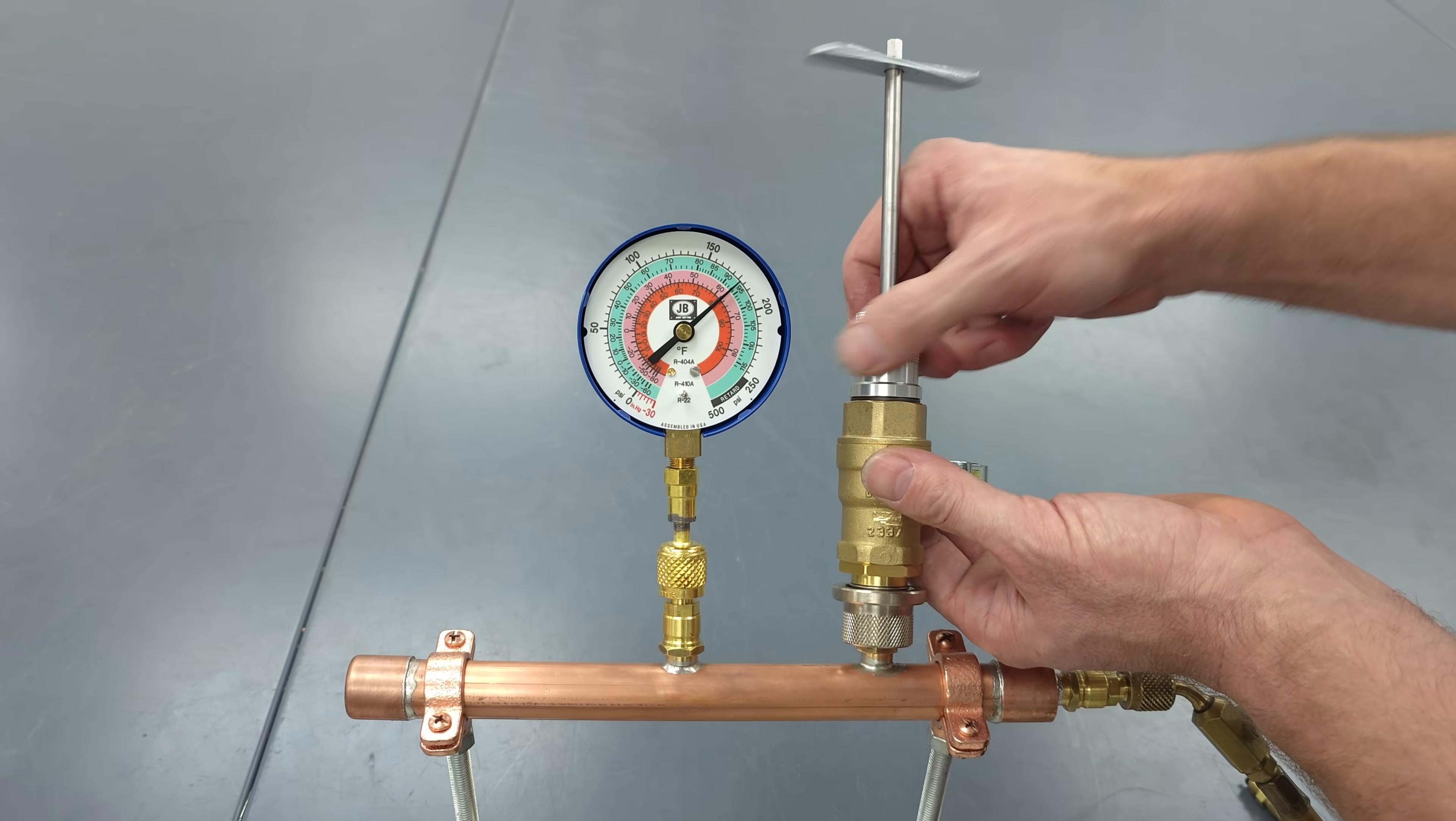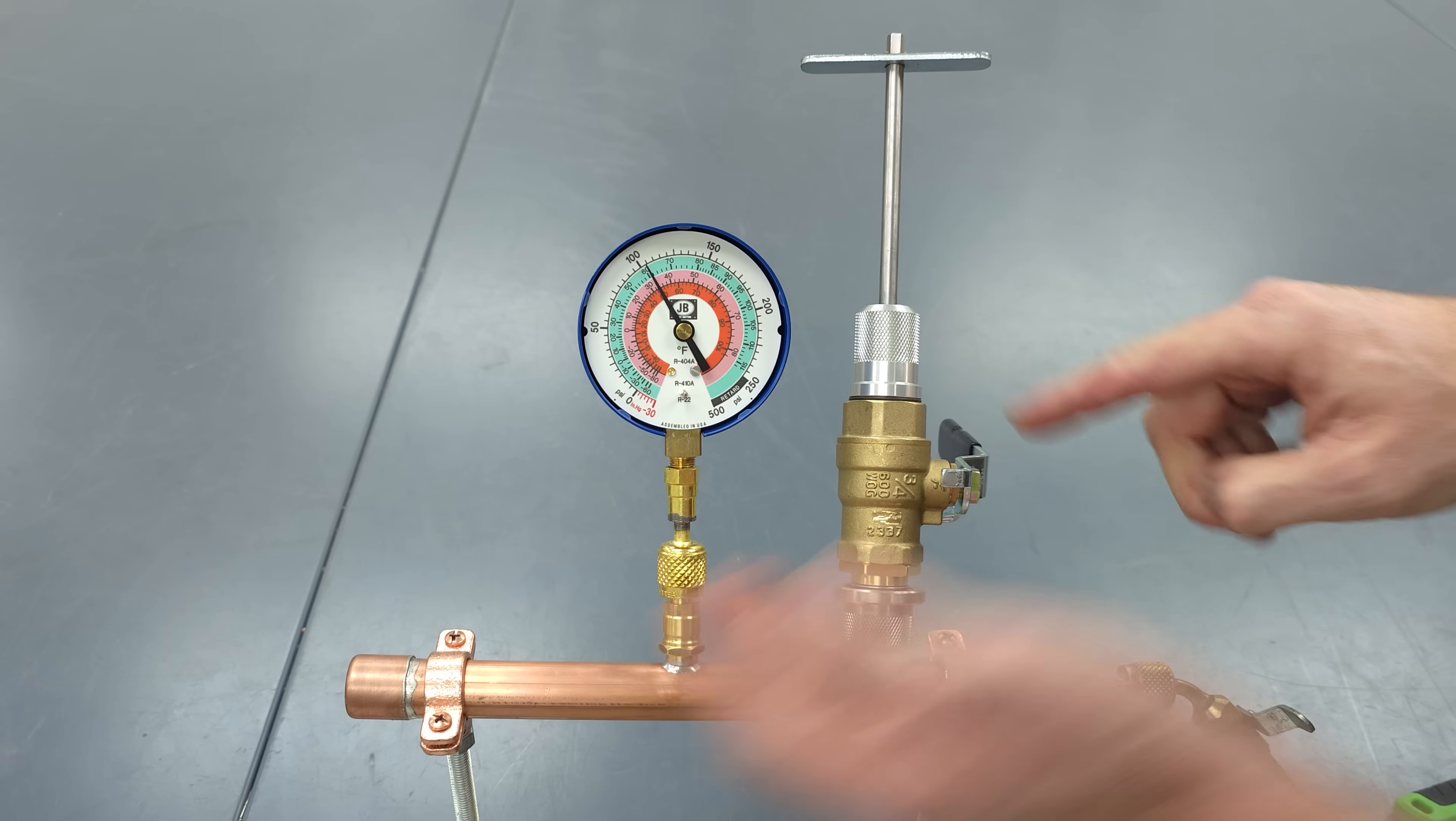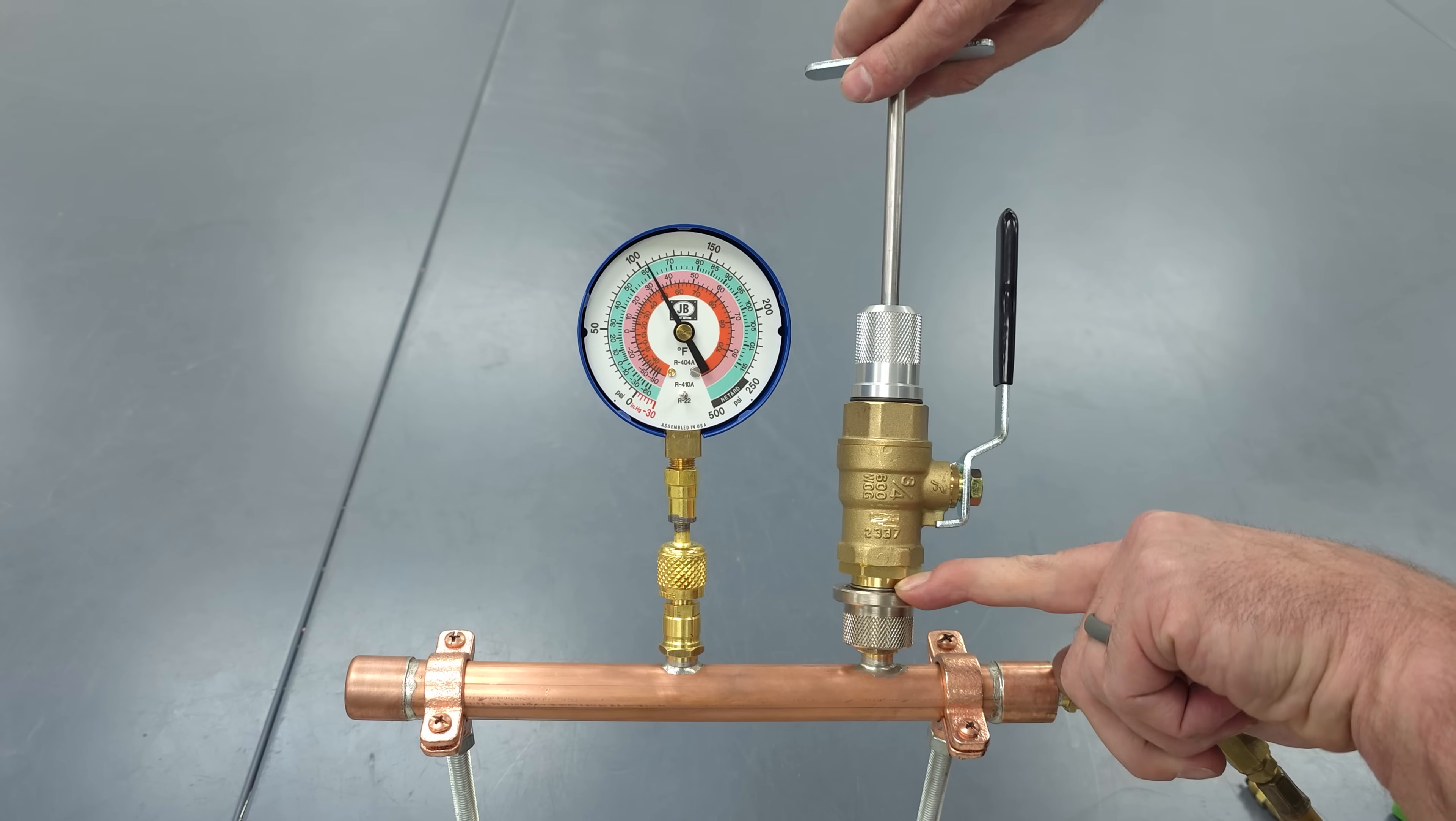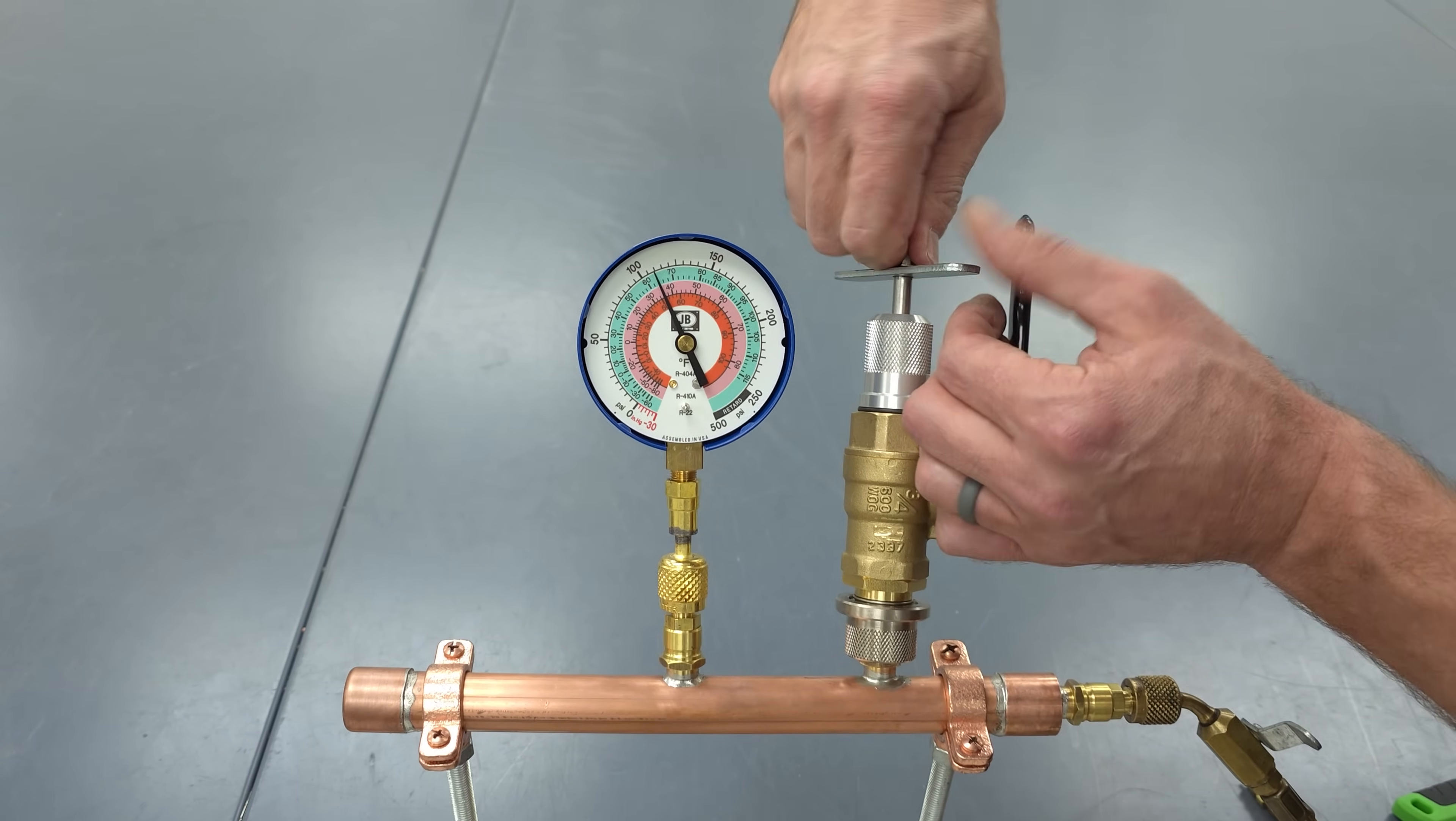Now when we tighten this in we want to open the valve because we want to make sure to purge any air that's in here out if this is refrigerant. And so now we can go ahead and open this up. Once again you want to make sure that this does not get bumped during this procedure and we can go ahead and push this in and turn it clockwise.